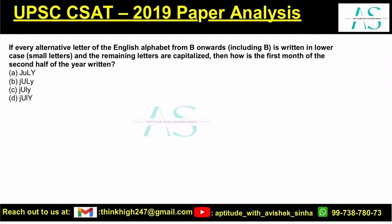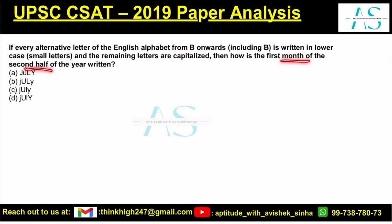If every alternate letter of the English alphabet from B onwards, including B, is written in lowercase and the remaining letters are capitalized, then how is the first month of the second half of the year written?